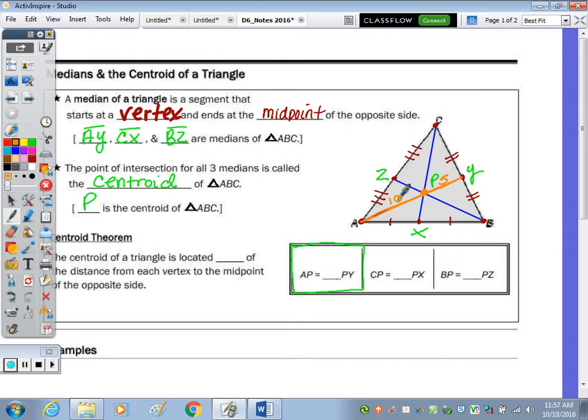Yep. So AP is twice PY. Same goes for the other median. So let's highlight this in the lighter blue. So looking at this median, okay, C to P is going to be also double PX. The relationship doesn't change. So if this was three, what would CP be? Six. Okay. And then the last one, which is left in that darker blue, B, Z. So B, P is also going to be twice PZ, the shorter one. So the longer segment is double the shorter. Okay.